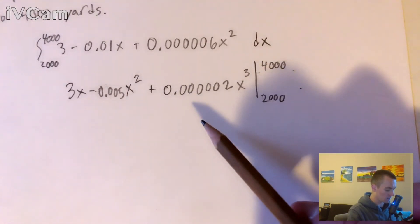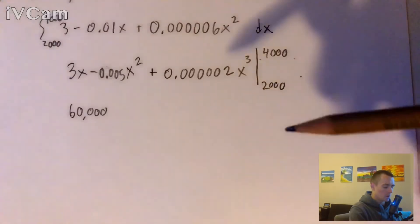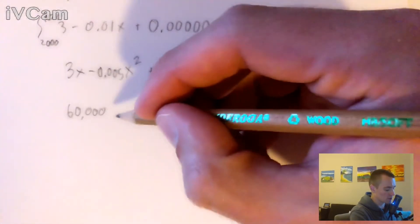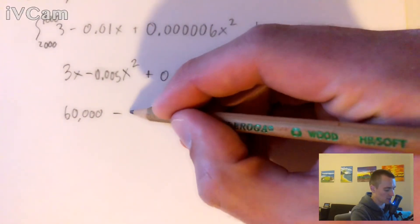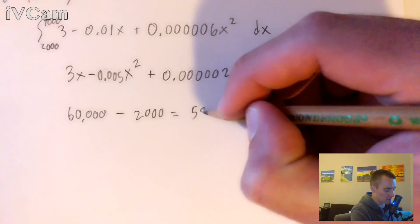When we plug 4,000 into this function, we're going to end up with 60,000. And then when we plug 2,000 into this function, we're actually going to get out 2,000. So we're going to get 60,000 minus 2,000, which equals 58,000.